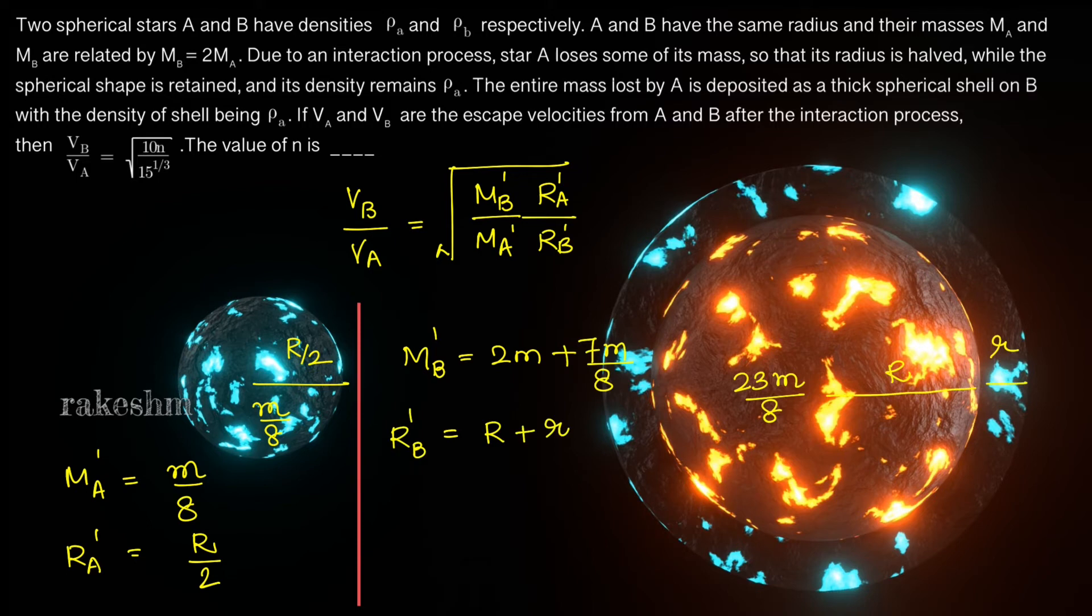The new radius of B is initial radius capital R plus small r, so initial radius capital R plus small r which is the thickness of the shell which is deposited on B.